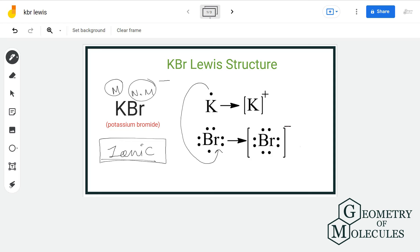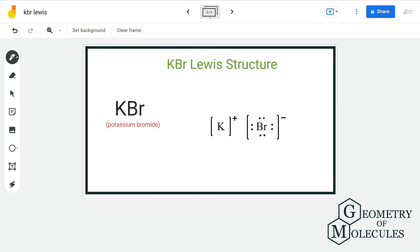This way, potassium will gain a plus 1 charge by donating 1 electron to bromine atom, and bromine will gain minus 1 charge and complete its octet by accepting electron. So, this is the Lewis structure of KBr.